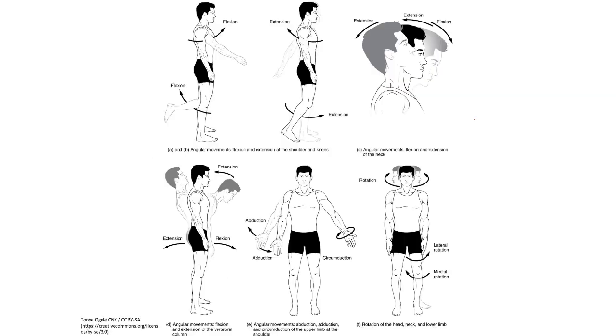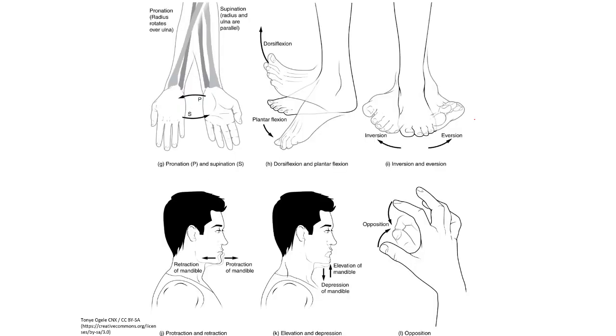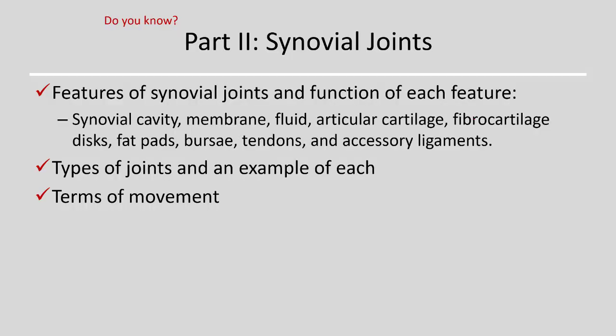Here are diagrams summarizing the motions of the body and limbs, with additional diagrams for more specialized movements. For part two you should be aware of the features of synovial joints and for each feature know its function. You should also know the types of joints and an example of each, as well as the terms of movement and what those motions represent.